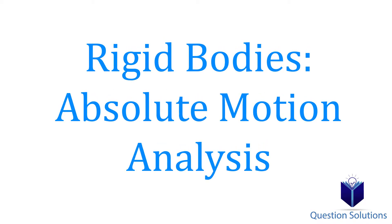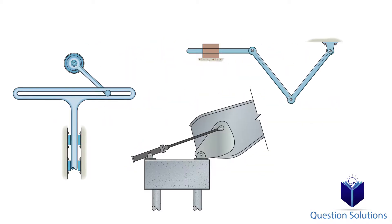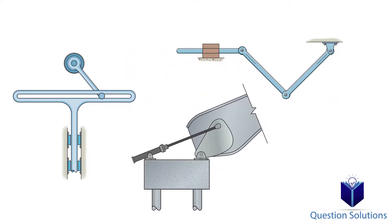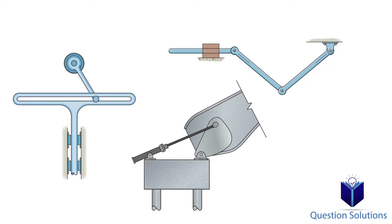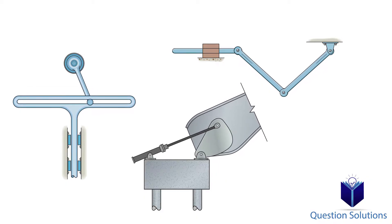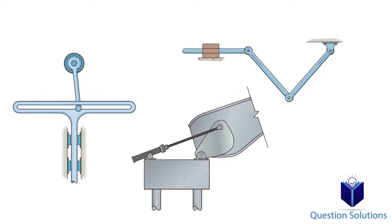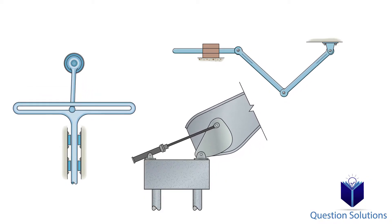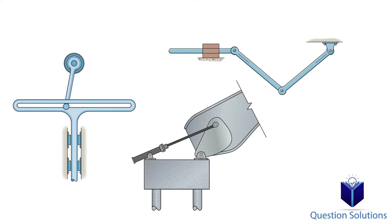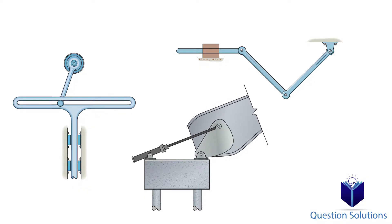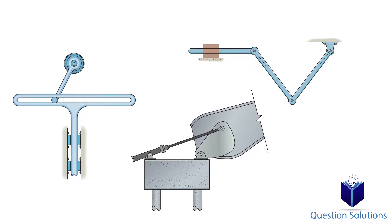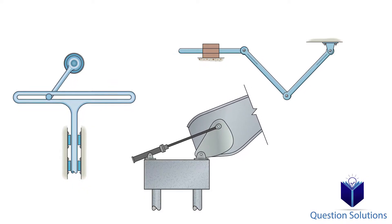In this section, we look at objects that go through rotational movement along with translational movement. The best way to understand this is with examples, but before we get there, let's quickly go over the basics we will need to do the questions.